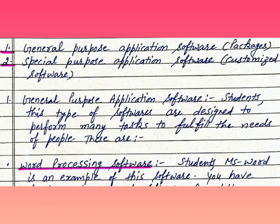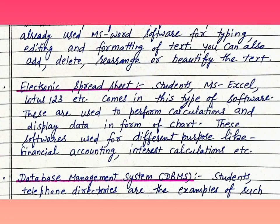General purpose application software. Students, this type of software is designed to perform many tasks to fulfill the needs of people. These include word processing software. MS Word is an example — you have already used MS Word for typing, editing, and formatting of text. You can also add, delete, rearrange, or beautify the text.